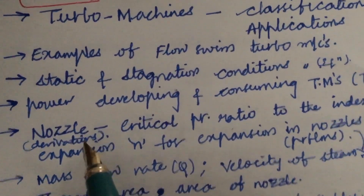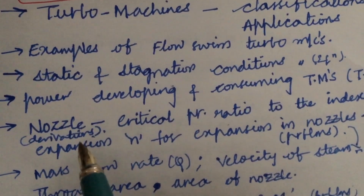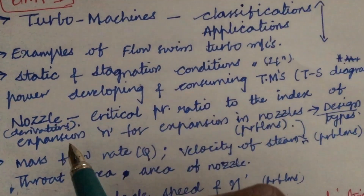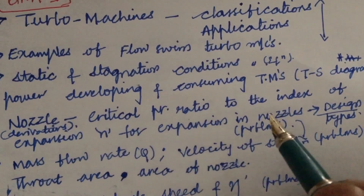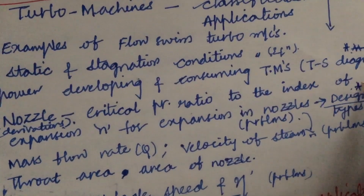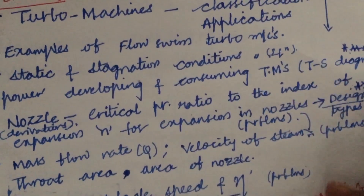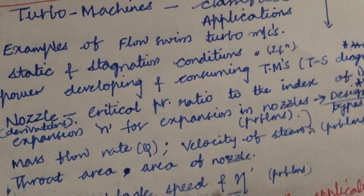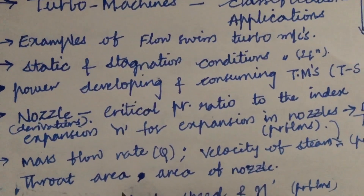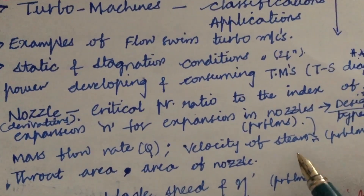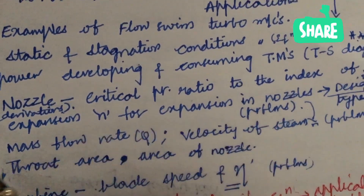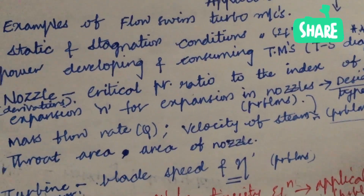Next, it is all about nozzles and their derivations, types of nozzles, critical pressure ratio, index of expansion n for expansion in nozzles, their designs and types. Problems related to nozzles are also a gunshot question, expected in 1A as well as 1B. Later, calculating the mass flow rate Q, velocity of the stream, throat area, and area of the nozzle — you will be getting one problem on these concepts for sure, dear students.